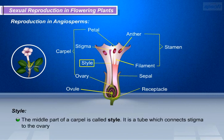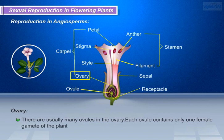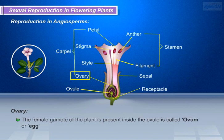The middle part of a carpel is called style. It is a tube which connects the stigma to the ovary. The swollen part at the bottom of the carpel is called ovary. It makes ovules and stores them. Ovules contain the female gametes of the plant. There are usually many ovules in the ovary. Each ovule contains only one female gamete of the plant, present inside the ovule.